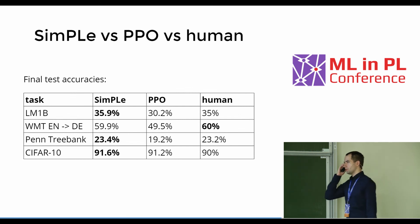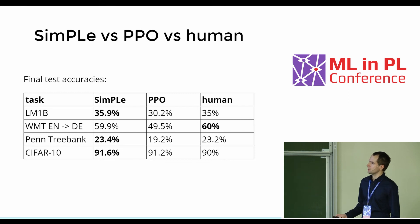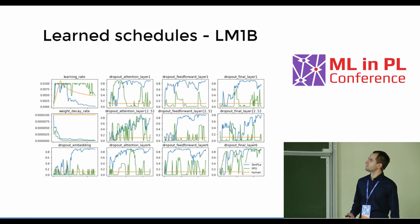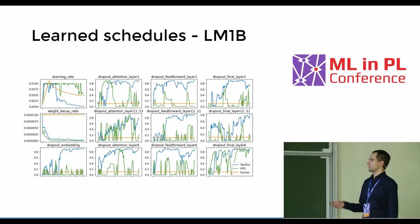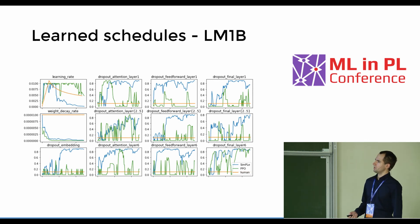Here is the table of final performance for all evaluated methods. On some tasks the SimPLe policy achieves significantly higher performance than the baseline — LM1B and CIFAR-10 — and on other tasks it achieves very similar performance. As mentioned, we also get faster convergence. Some examples of hyperparameter schedules learned by our policies are shown here, but there is not time to go into details.